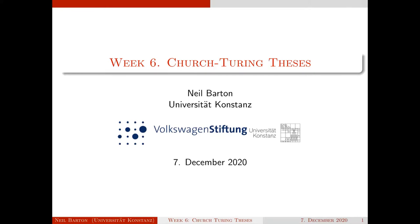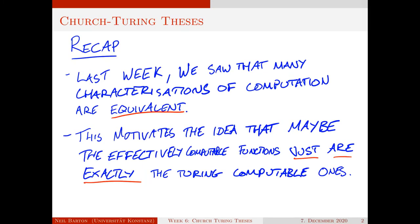We'll also discuss some related theses in this direction, so I hope you enjoy the lecture. Before I get going, I should clarify that there's been an awful lot of work done on the Church-Turing thesis and variants of it, or theses closely related to it. For this reason I'm not going to be able to cover everything, but I hope I can give an idea of some of the core motivations for it and also some questions that we might look at in future research. Let's recap to build some motivation. Last week we saw that many characterizations of computation are equivalent — we discussed abacus machines and the characterization of computation in terms of recursiveness, and how these all turned out to be equivalent to Church-Turing computation. This motivates the idea that maybe the effectively computable functions just are exactly the Turing-computable ones.